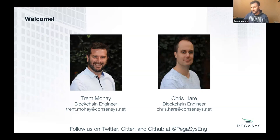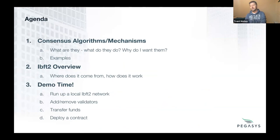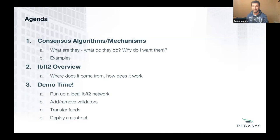So why are we here today? We are here to talk about consensus algorithms and mechanisms. The consensus mechanism is a fairly critical section of every blockchain. It's fairly important that we understand what they are, what they do, why we want them, and why we'd pick one over another. We'll go through examples of consensus mechanisms currently available for use in Ethereum, comparing and contrasting the good and bad bits.